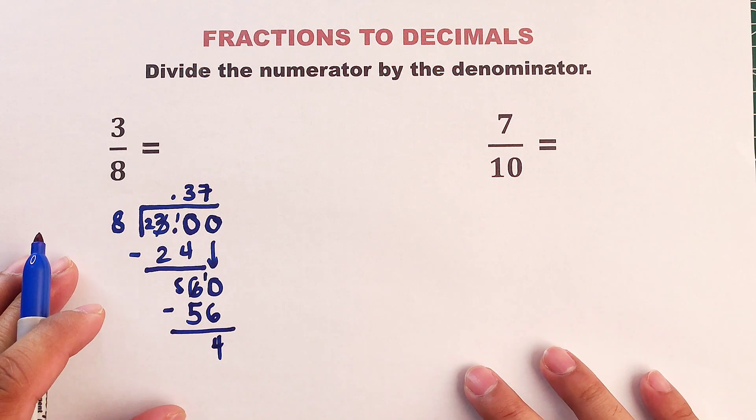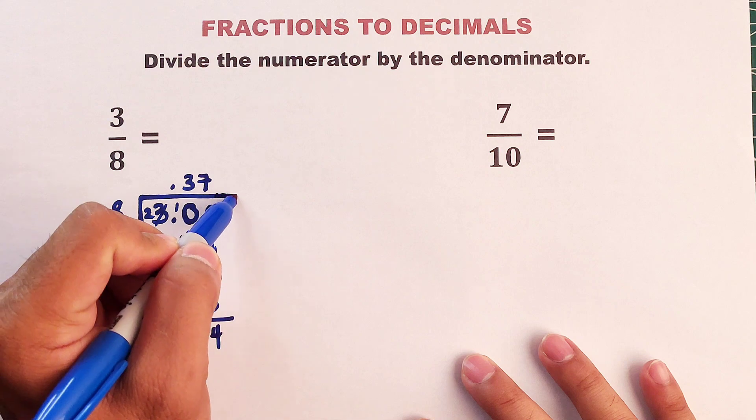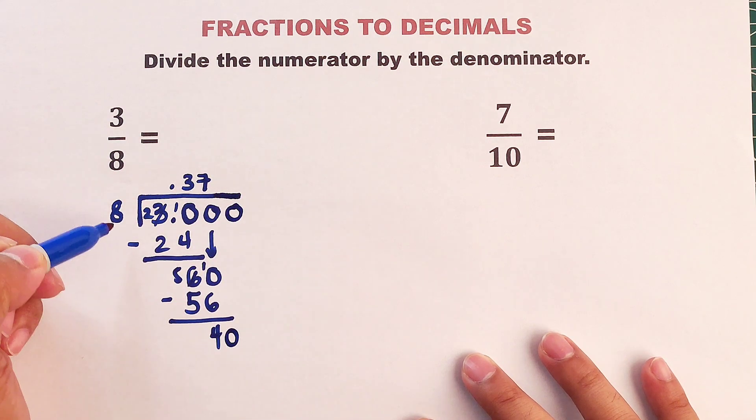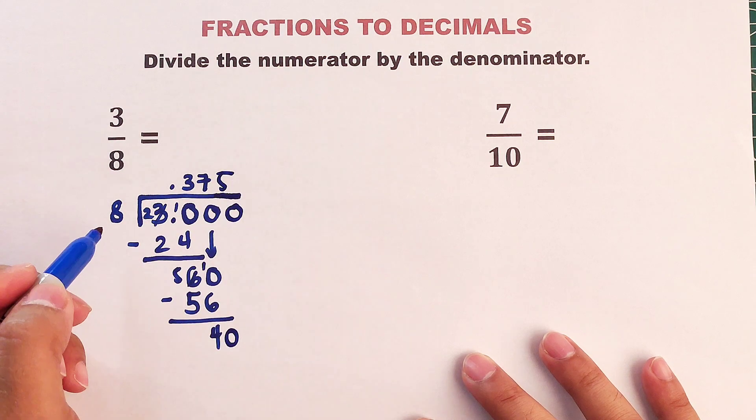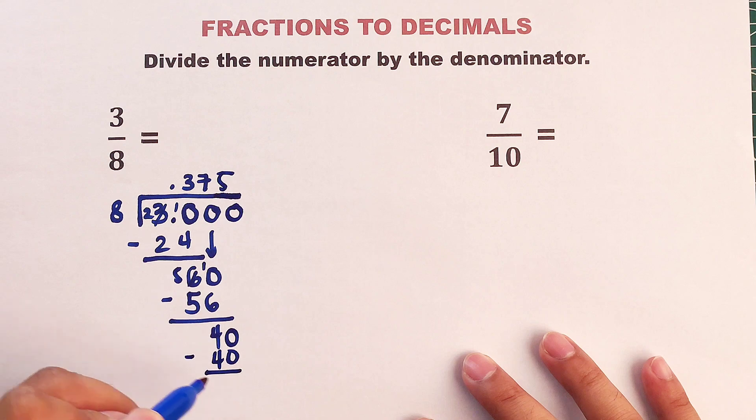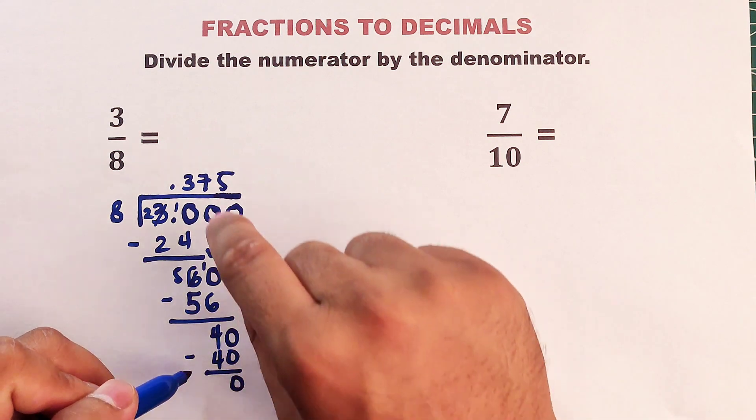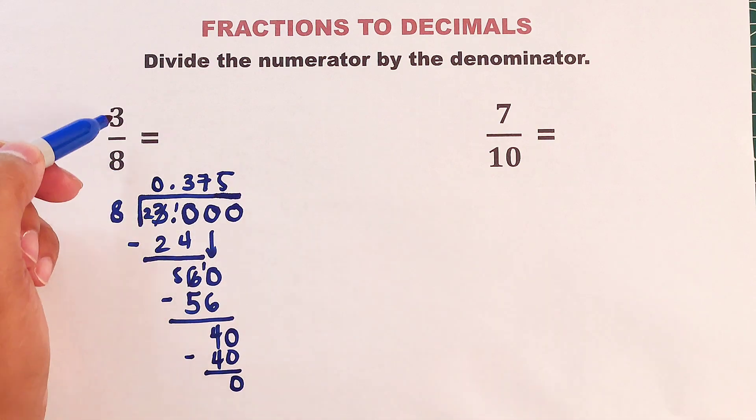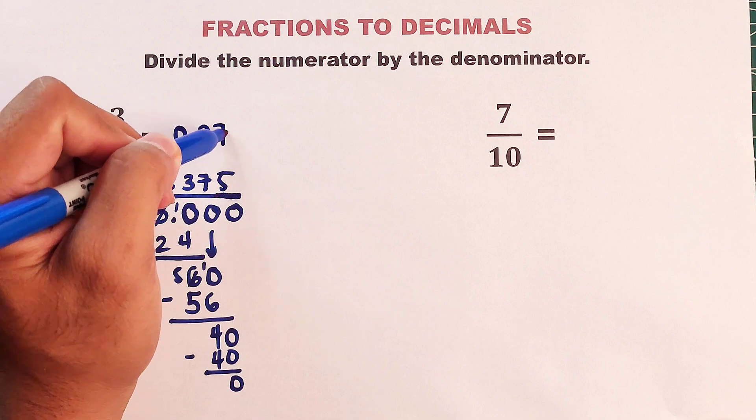Meaning what we need to do, I will adjust the paper first. First, I will add another 0 here. Then bring down 0. So right now, we have 40 divided by 8, which is equal to 5. 5 times 8, that would be equal to 40. Subtract the numbers. The answer is 0. As you can see, this is 0. So this is our answer. The value or the equivalent decimal of 3 over 8 is simply 0.375.